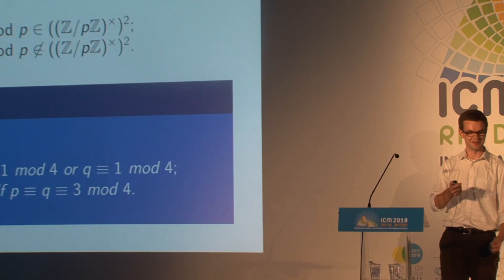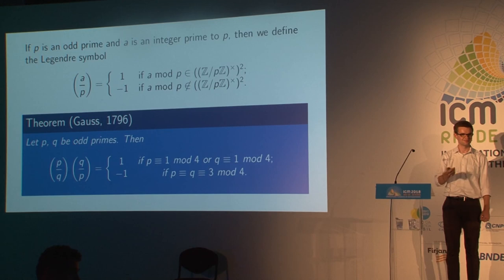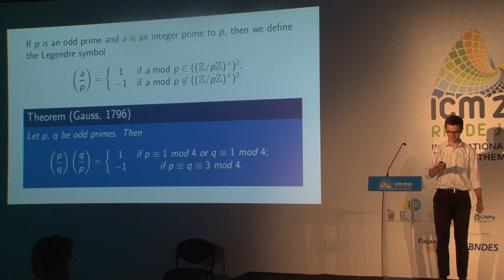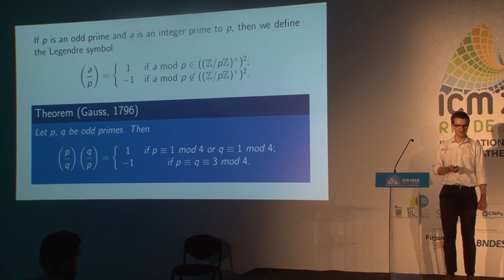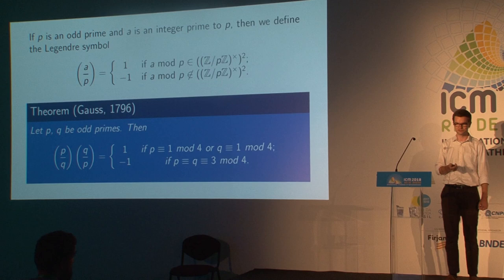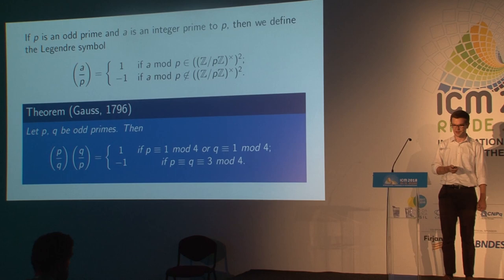I want to start by talking about quadratic reciprocity, which is very famous in number theory. If you have an odd prime p, the Legendre symbol a mod p tells you whether a is either a square modulo p, in which case it's one, or not a square, in which case it's minus one. The fundamental fact about the Legendre symbol is the law of quadratic reciprocity, proved for the first time by Gauss in his Disquisitiones. It says if you have two distinct odd primes p and q, you can compute the Legendre symbol of p mod q in terms of the Legendre symbol of q mod p very easily. I'm going to show you a proof of this that uses the properties of an automorphic form.